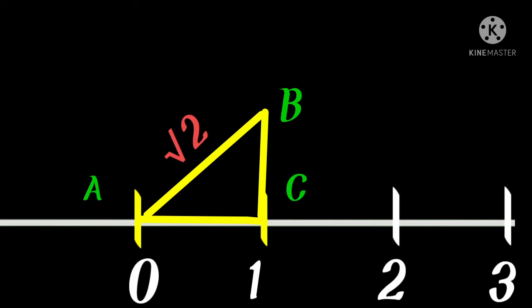Now we take a compass and measure from A to B. Since √2 is above the number line, not on it, we measure the compass set to that length AB (which is √2), draw a semicircle, and the point where it meets the number line is exactly √2. So this is how you plot √2: one unit plus one unit gives the hypotenuse √2, and we mark that point on the number line.